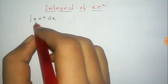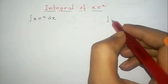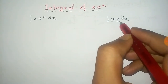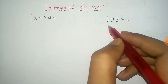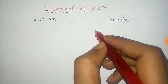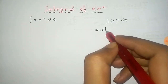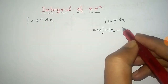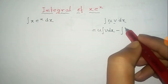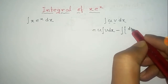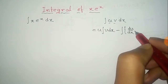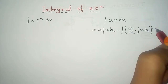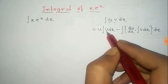To find the integral we use the formula for the integral of u v dx. Here u is the first function and v is the second function. The formula is given by: first function into integral of second function, minus the total integral of the derivative of the first function into the integral of the second function, dx.